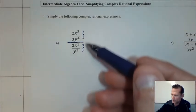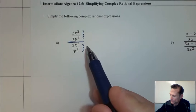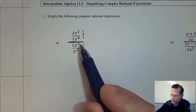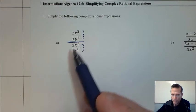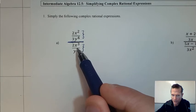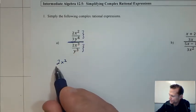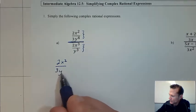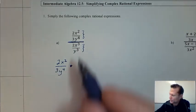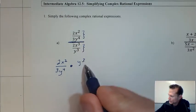I call this type one where we see a single fraction over another fraction. We can think about what did we do when we had a fraction divided by a fraction. What we did was we would copy the first fraction, change the sign to multiplication, and then we would write the reciprocal of the second fraction.